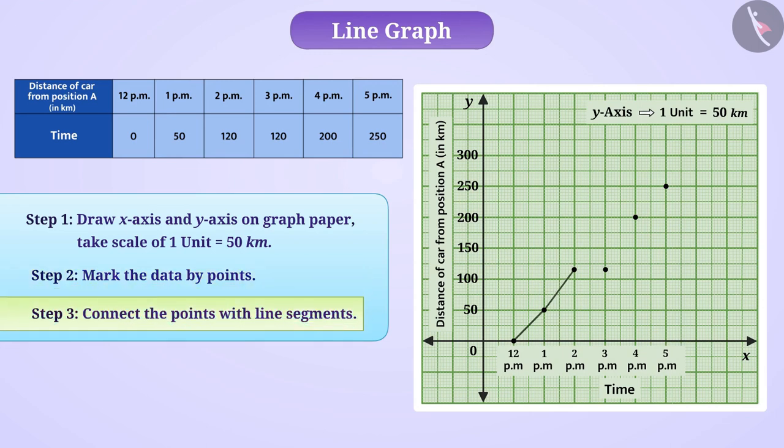From this, we will get a graph of the distance of car from place A at different times. With the help of this line graph, we can now tell the position of the car at a given time.